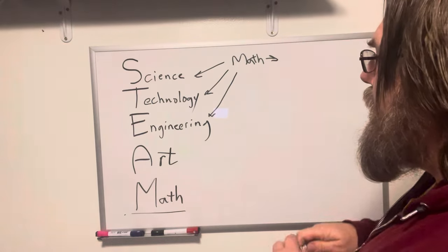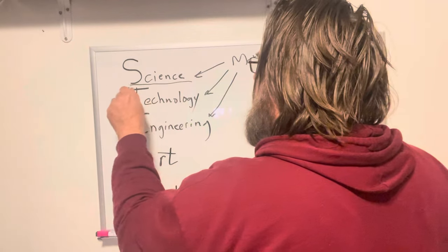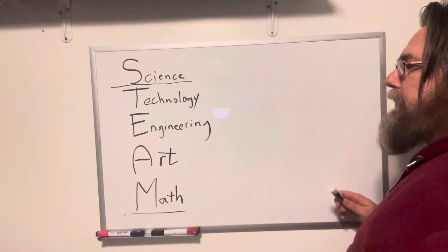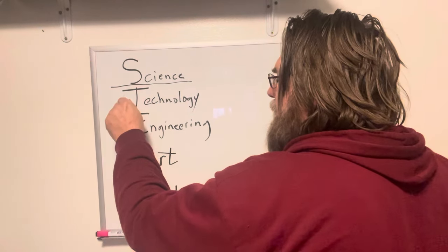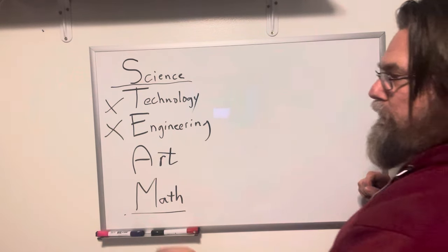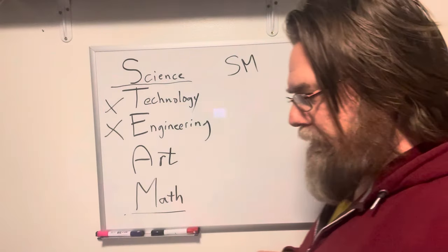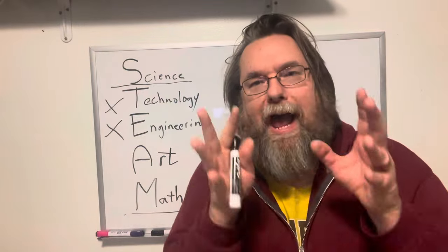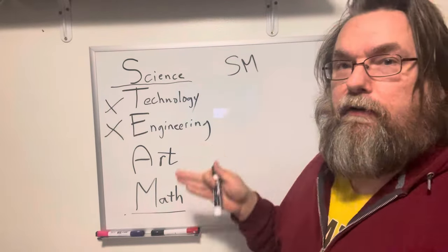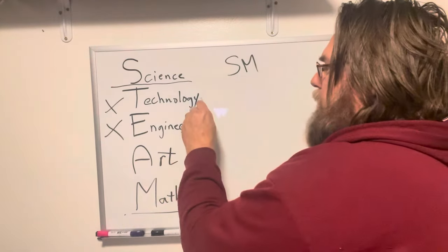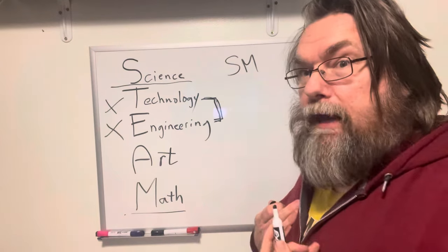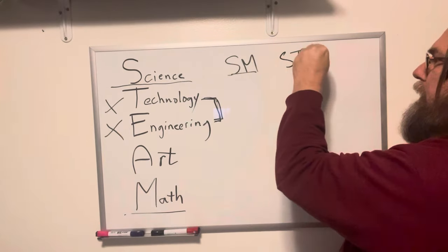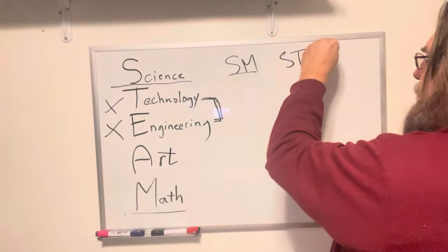Engineering, science, technology — if we use science as our base instead of math, like with the BSc versus BA distinction, then in that case technology and engineering don't belong either, and it would just be science and math. Why? Because technology and engineering are practical applications of science. You can't really have one without the other. So if you're going to include technology in STEM, you have to include engineering. And we all know these are all math-based — that gives us STEM.